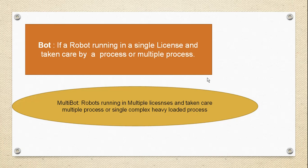The main difference between single bot and multi-bot: a single robot can run on a single license and handle a single process or multiple processes. Multi-bot means multiple robots running on multiple licenses and taking care of multiple processes, or a single complex high-volume process.